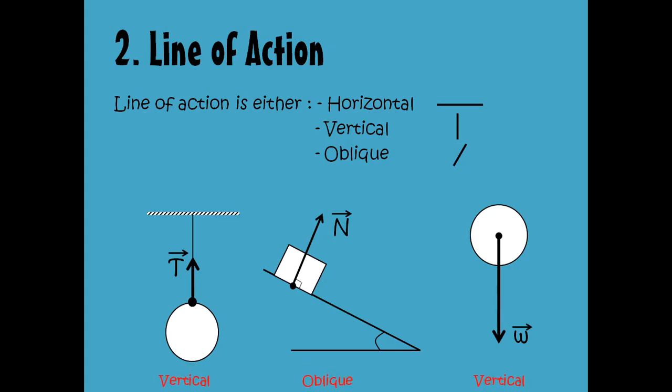The second characteristic is the line of action. The line of action is either horizontal, vertical, or oblique — leaning to the right or leaning to the left. As in these three figures: in the first figure, the line of action is vertical; in the second diagram it's oblique, leaning to the right; and in the third diagram it's also vertical, regardless of the direction of the vector.